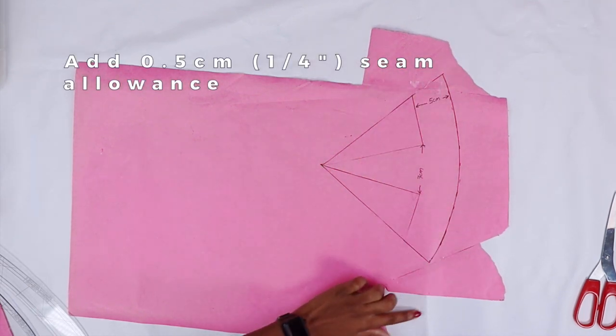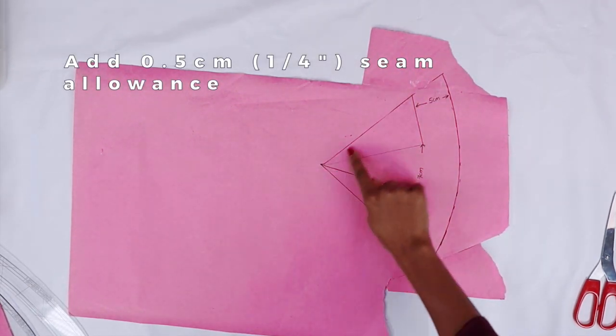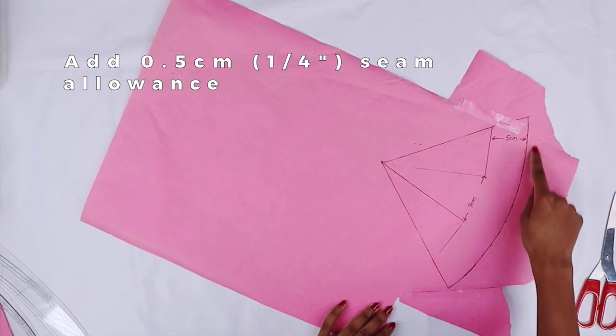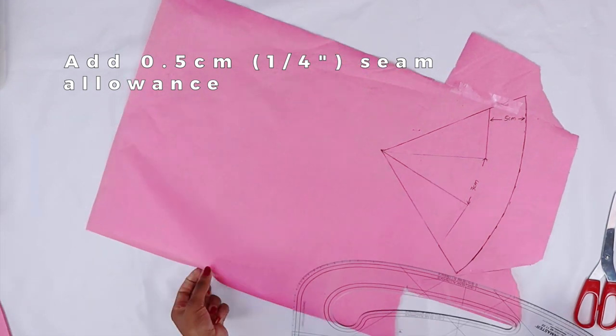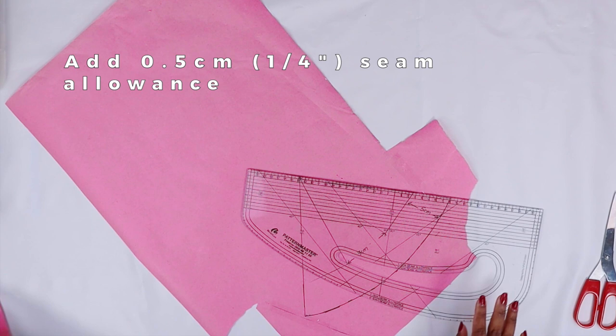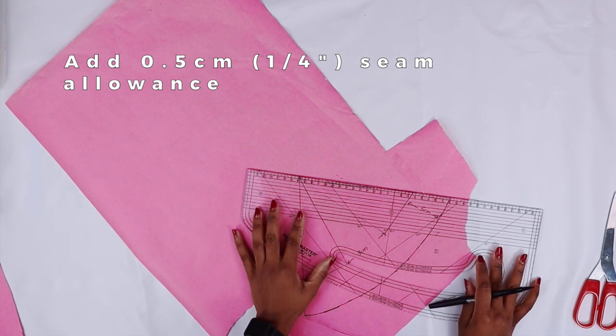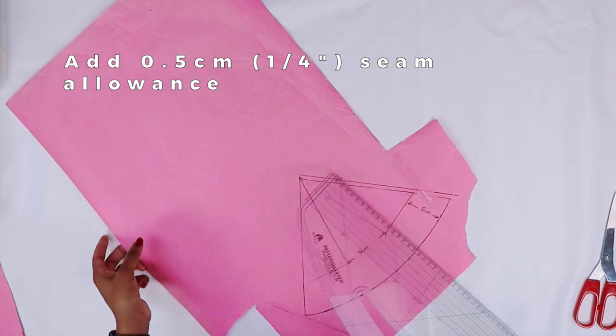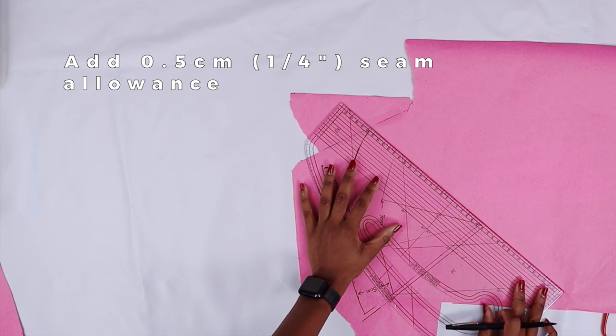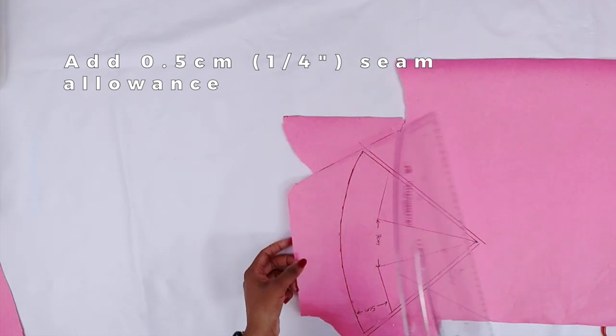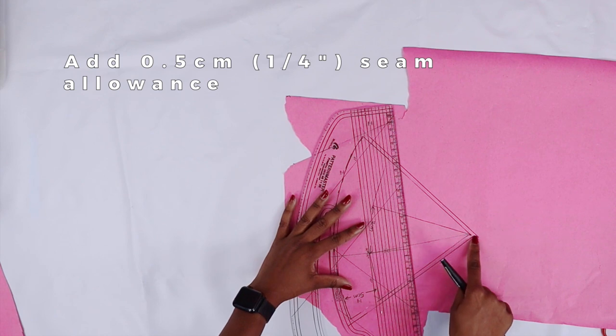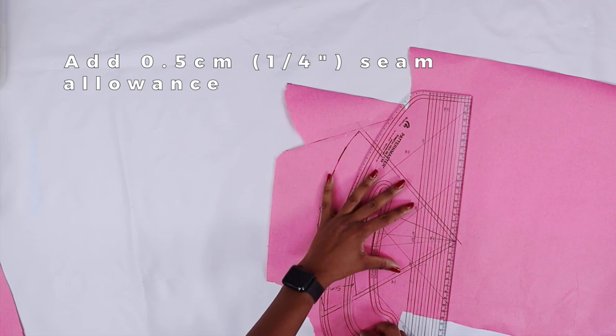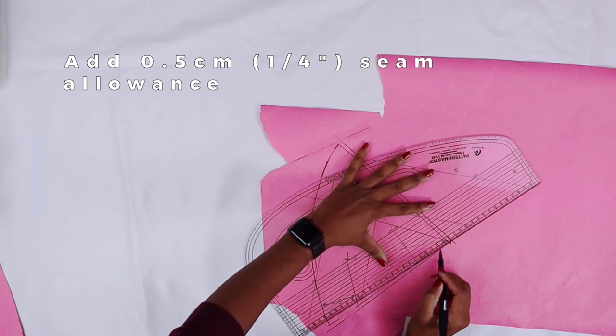Now we're going to add our seam allowance. Just add 0.5 centimeters seam allowance all around, and then just add 0.5 centimeters at the top.